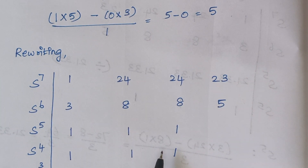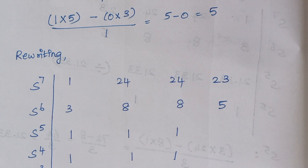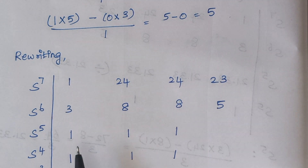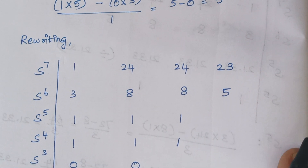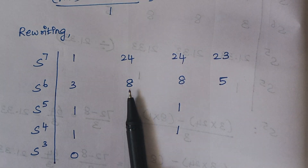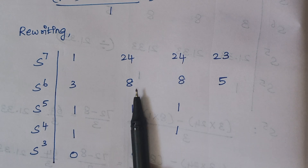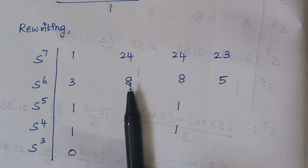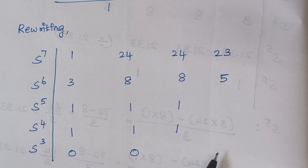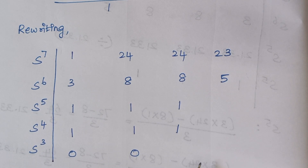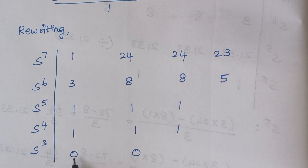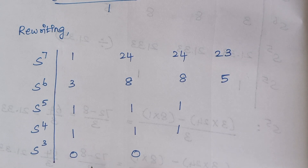The next step is to find S cube. As usual: 1 times 1 minus 1 times 1 = 0, so the first element is 0. Again for the second element: 1 times 1 minus 1 times 1 is again 0. So S to the power 3 has a row of zeros. Whenever you have a row of zeros, you have to find the auxiliary equation. The row before the row of zeros will contribute the auxiliary equation.